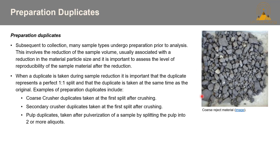Preparation duplicates, or prep dupes, are taken subsequent to collection, as many sample types undergo preparation prior to analysis — for example, crushing a drill core sample to a size appropriate for analysis. It's important to assess the reproducibility of the sample material after crushing or size reduction. When a duplicate is taken during sample reduction, it should represent a perfect one-to-one split taken at the same time as the original. Examples of prep duplicates include coarse crusher duplicates taken after the first split after crushing, secondary crusher duplicates, and pulp duplicates taken after pulverization by splitting the pulp into two or more aliquots.